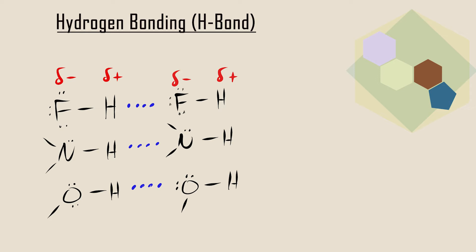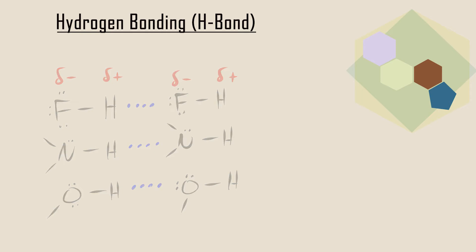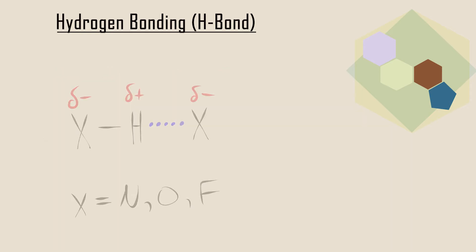As a result, the partially positive H of one of the molecules is attracted to the partially negative lone pair on the N, O, or F of another molecule, resulting in a hydrogen bond or H bond. The atom sequence that allows hydrogen bonding to form is shown here. The small sizes of N, O,